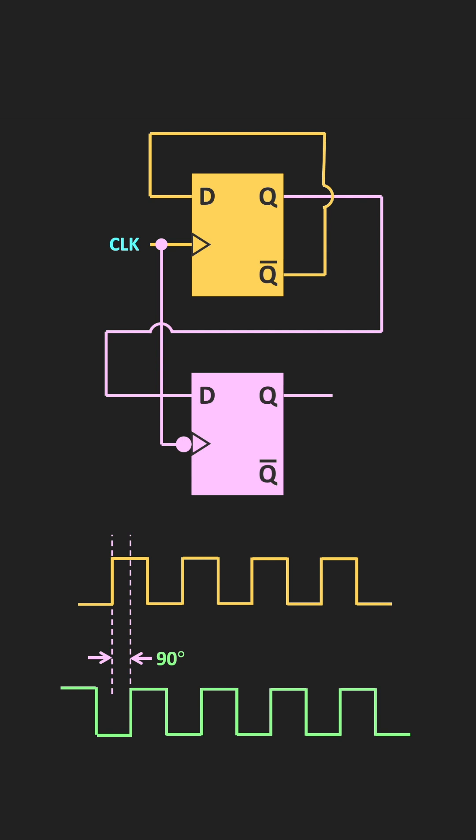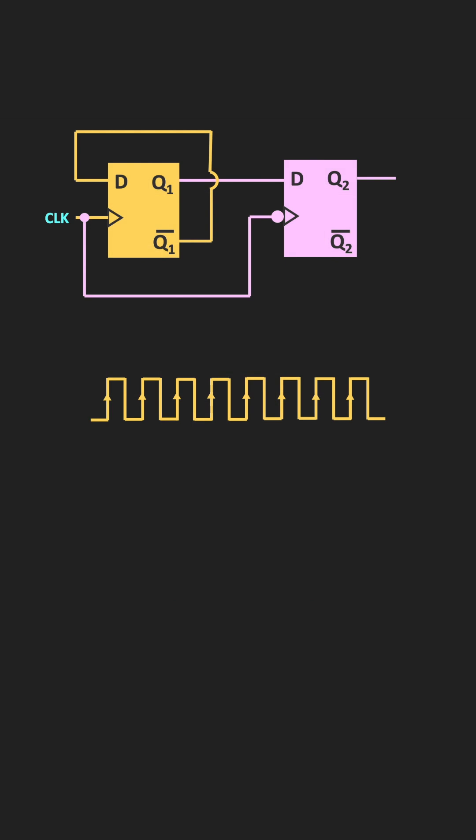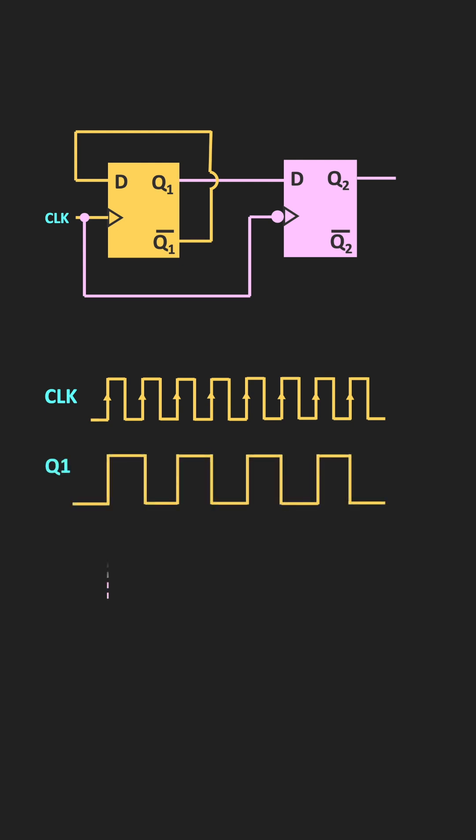So now let us see how it will work. Here, this is the clock signal. As I said, when we connect the Q-bar output of the D flip-flop back to the input side, then the output will toggle at every clock edge. So this Q1 output will toggle at every rising edge. And now this output is connected as an input to the second flip-flop. Since the second flip-flop is the negative-edge-triggered flip-flop, it will respond to this output at the falling edge.